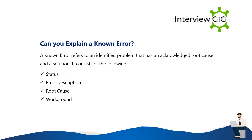Can you explain a known error? A known error refers to an identified problem that has an acknowledged root cause and a solution. It consists of the following: Status, Error Description, Root Cause, and Workaround.